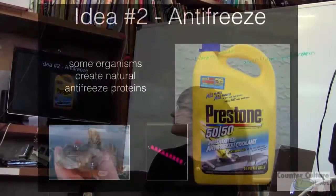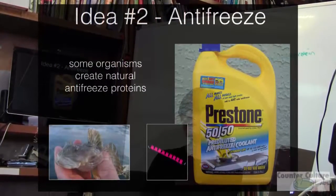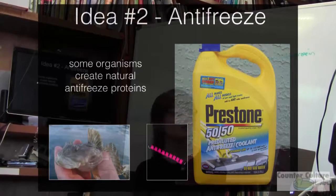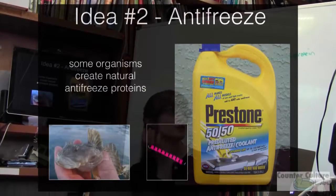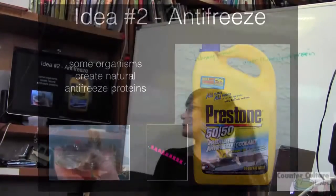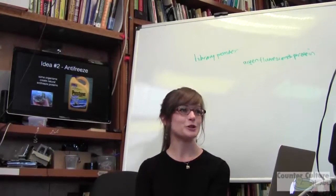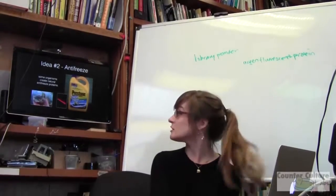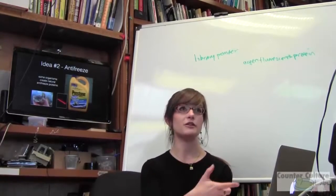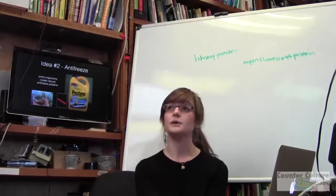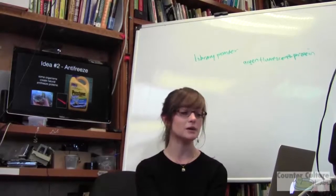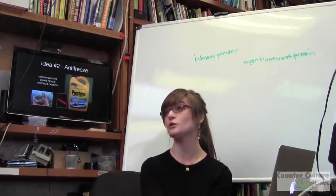Idea number two: anti-freeze. This has been studied before and worked on a little bit. Some organisms naturally create their own anti-freeze proteins. Fish that live in very cold temperatures create anti-freeze proteins within their cells to make sure they don't freeze. It would be interesting to isolate these proteins, find the protein sequence, and give anti-freeze properties to other organisms. Some of these anti-freeze proteins are available — the gene sequence is available.